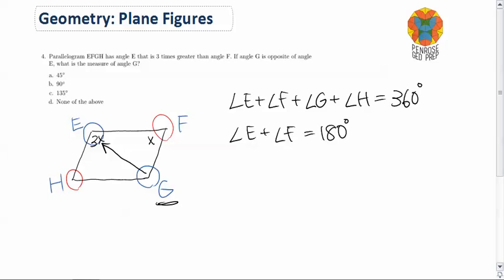Since the second equation is much shorter and a lot easier to deal with, we'll just use this one. So, if we substitute 3x for angle E and x for angle F, we get 3x plus x, which is 4x, which equals 180 degrees.